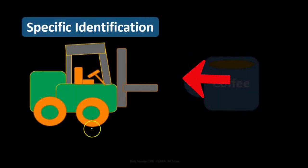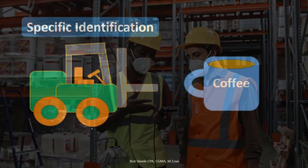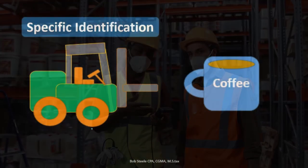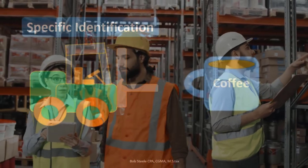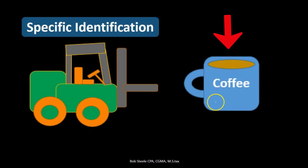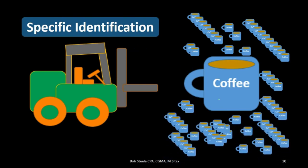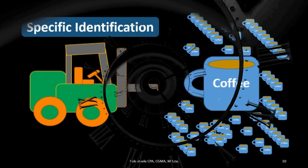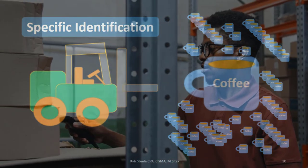What we've used here is specific identification. The reason we use that method is because forklifts are fairly large items — we probably don't have many of them compared to other types of inventory — and they could be different in nature, with different colors and features. If we were selling something completely uniform with a large quantity, like coffee mugs, specifically identifying every item might not be worth our time, and we might not want to track exactly which coffee mug we sell.